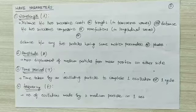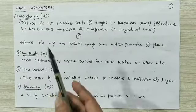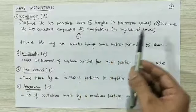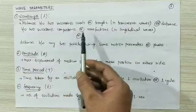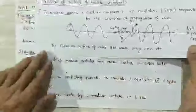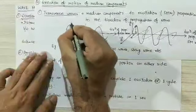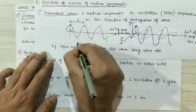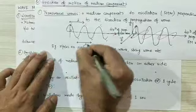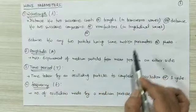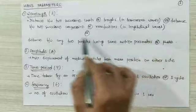Now we will see some wave parameters. First: wavelength. Wavelength is the distance between two successive crests or troughs in a transverse wave, or the distance between two successive compressions or rarefactions in a longitudinal wave. A second definition is: the distance between any two particles having the same motion parameter or same phase — this definition will be clearer later.